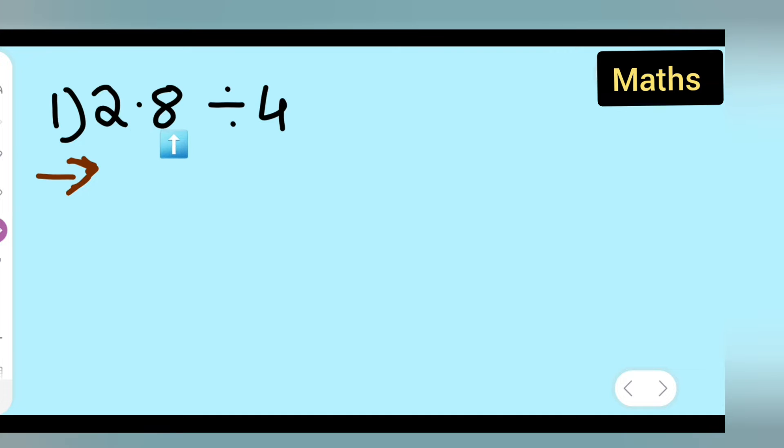First, write down this: 2.8 divided by 4. After this, remove the decimal point. What you'll have to do is write 28 upon 10, because this is the place of tenths, right? So multiply it with the reciprocal of 1 upon 4.